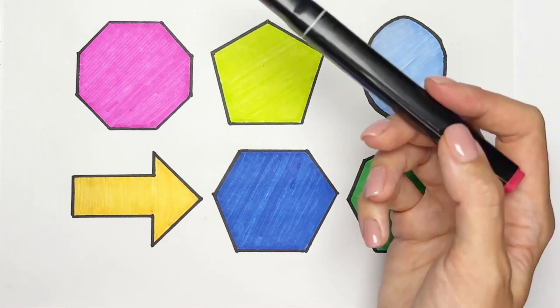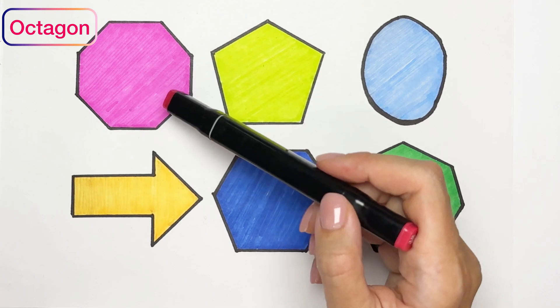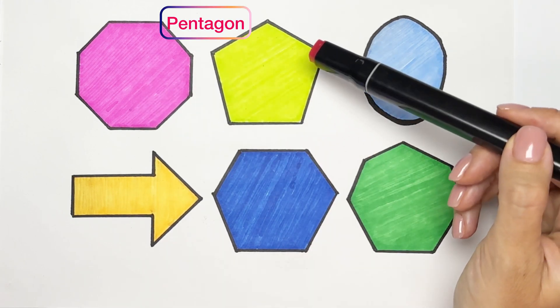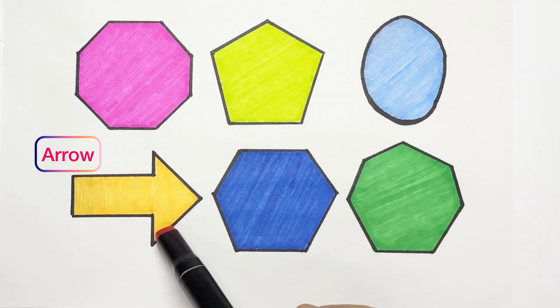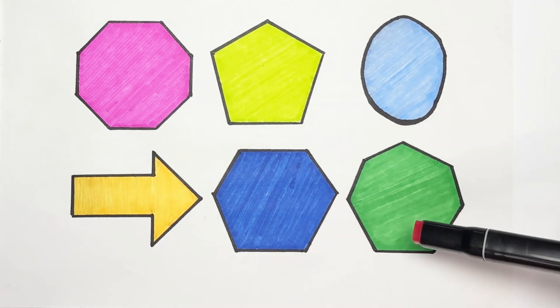So we have pink octagon, light green pentagon, light blue oval, orange arrow, blue hexagon and heptagon.